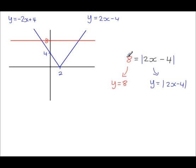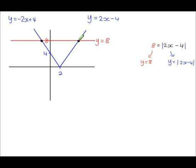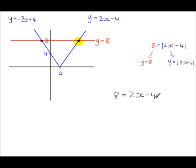The solution is where the two graphs are equal, and there are two solutions — we need the x-value for each intersection. To find the x-coordinate of the right intersection, we solve simultaneously: y equals 8 and y equals 2x minus 4. So 8 equals 2x minus 4, giving 12 equals 2x, so x equals 6.